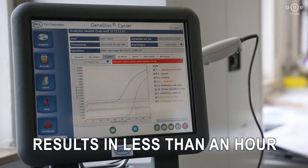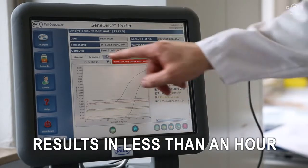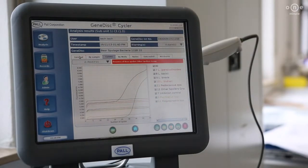In less than an hour, the GeneDisc Cycler will provide interpretation of the results in the general tab. In addition, further details for each sample can be accessed.